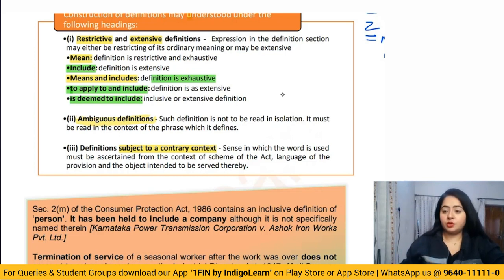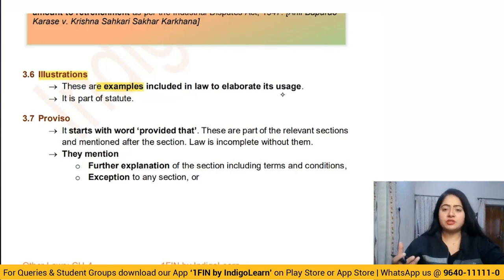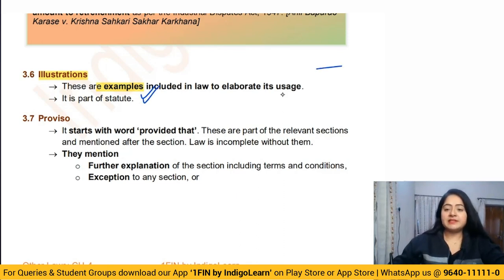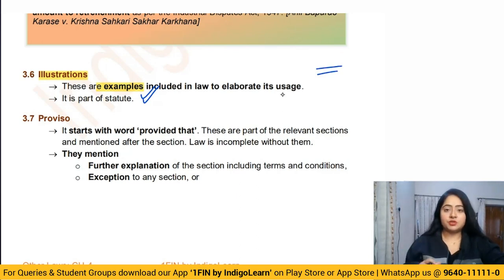Illustrations are examples given under a section by the lawmakers themselves and are part of the statute. In the Indian Contract Act, many sections have illustrations mentioned under them. These illustrations elaborate the usage of that section and can definitely be used for interpretation. However, just because one example is given does not mean the section is restricted to that one example — a section might apply to many more different types of situations, and the illustration does not limit the meaning of the statute.